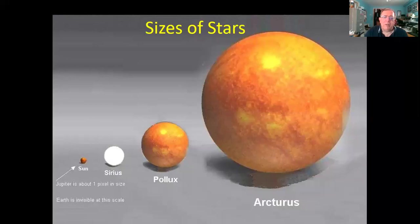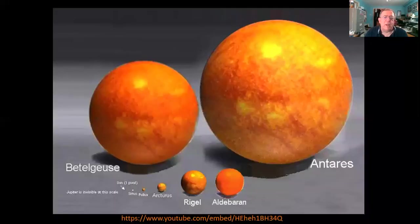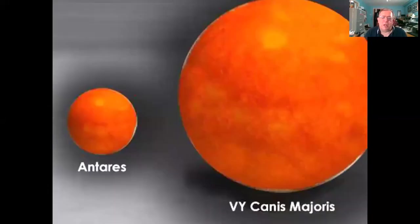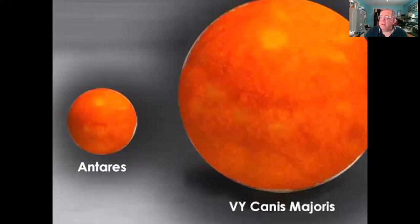But those stars are by no means the largest. Stepping the scale up so the sun is one pixel, Sirius, Pollux, and Arcturus now look small compared to Rigel, Aldebaran, and the supergiants Betelgeuse and Antares. But Antares is not the largest—the biggest star we know is VY Canis Majoris, which makes even Antares look fairly modest. At about 200 times the mass of our sun, if it were where the sun is, the whole solar system would fit easily inside the envelope of VY Canis Majoris.